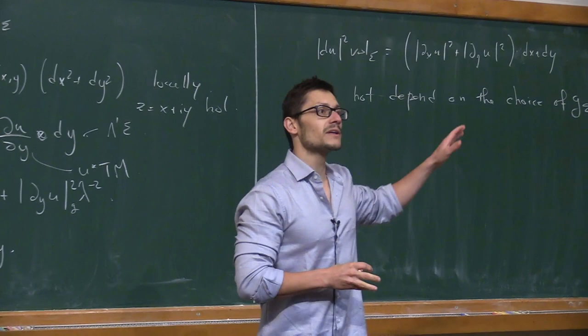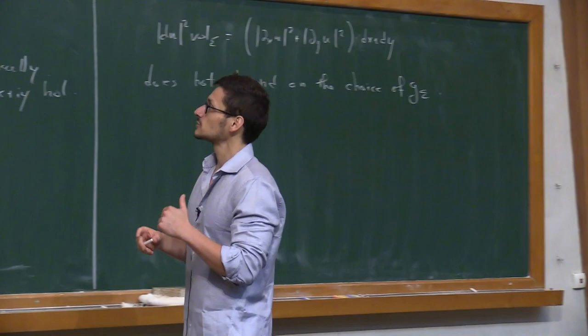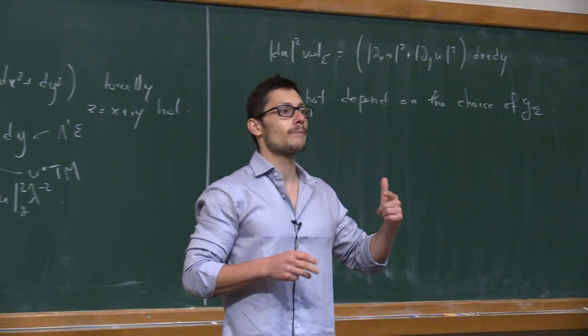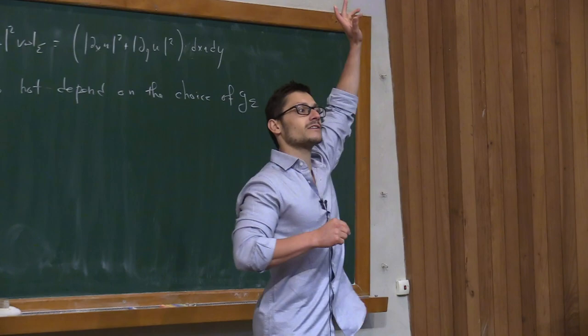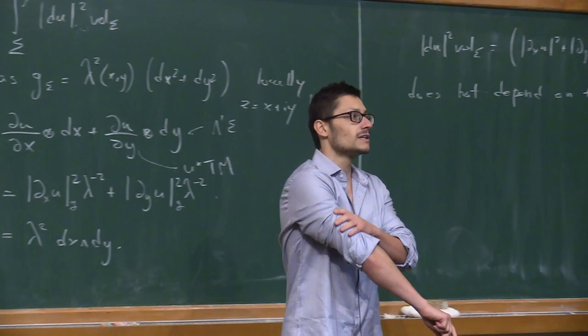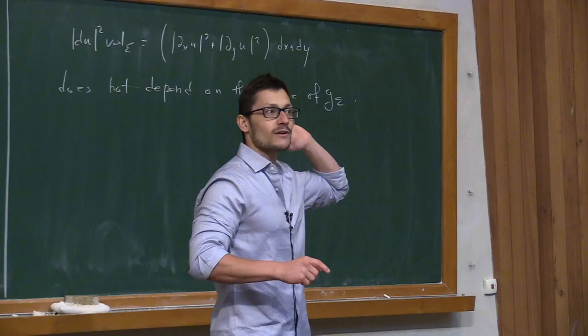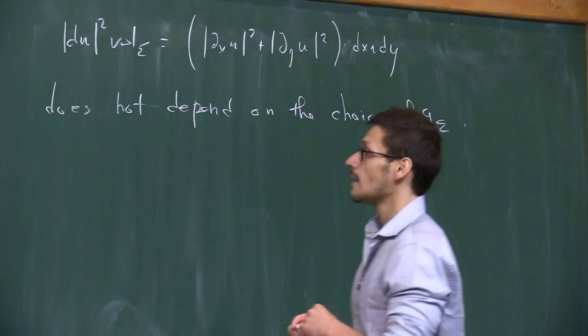This observation is actually very linked to something we will see later, which is the failure of compactness. If you have an element of the automorphism group of this Riemann surface, you can precompose u with it and get another map with the same energy. If this automorphism group is non-compact, you can precompose with a sequence of elements going off to infinity, giving a sequence with no convergent subsequence of maps, all with the same energy. Keep this in the back of your mind for later in the talk.